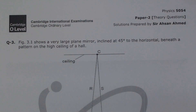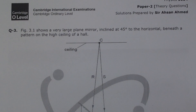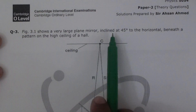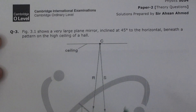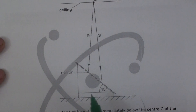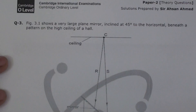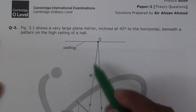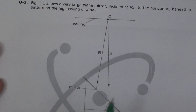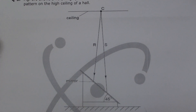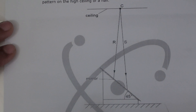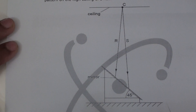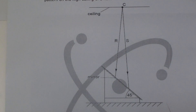This is a tricky question from past papers because it includes a tilted mirror. Figure 3.1 shows a very large plane mirror inclined at 45 degrees to the horizontal, beneath a pattern on a high ceiling. Let's work on this question — I have to adjust the frame so we don't get confused.